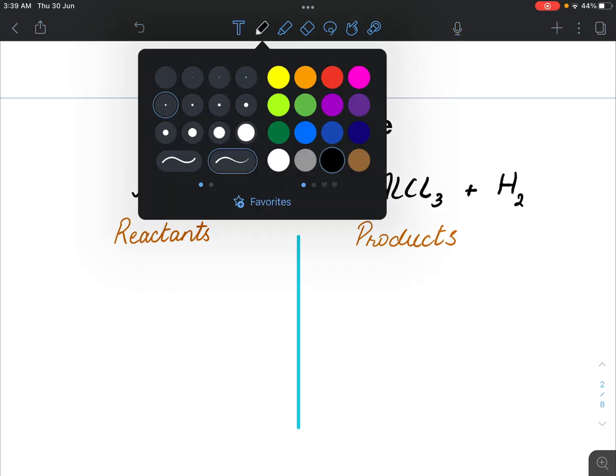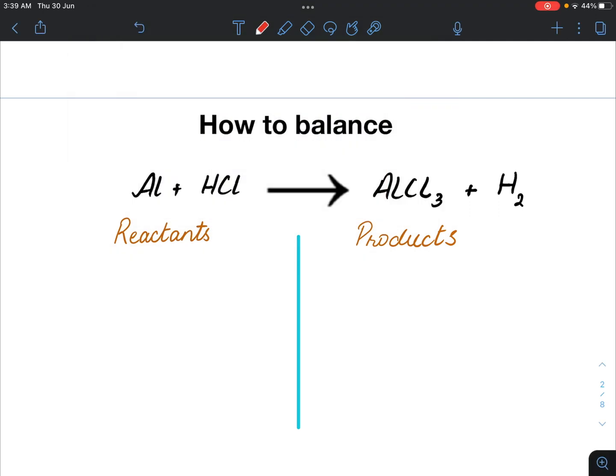To see if this equation is balanced, we must count the number of atoms at the reactant site and the number of atoms at the product site.